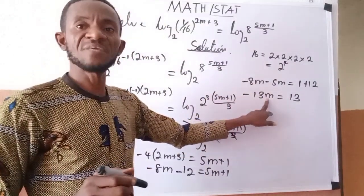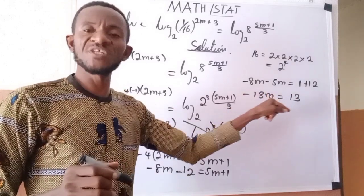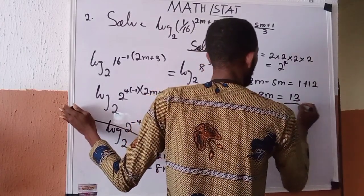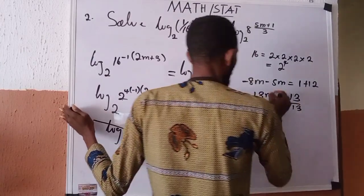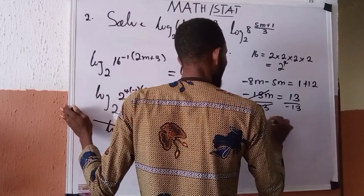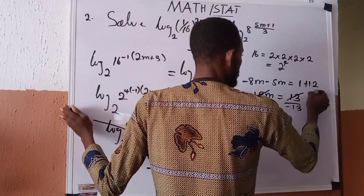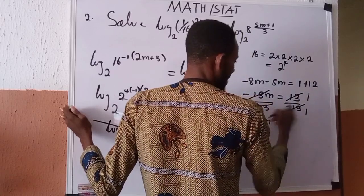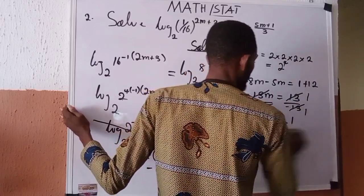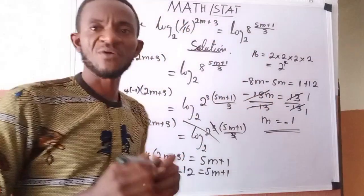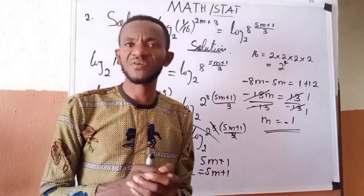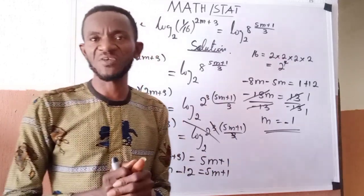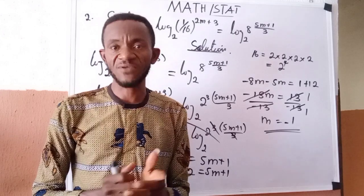To obtain the value of m, divide both sides by −13. So m equals 13 over −13, which equals −1. Therefore m equals −1. Thank you very much for your attention. That is how to find the solution to that kind of problem. We look forward to having you in our next class. Thank you very much and stay tuned.